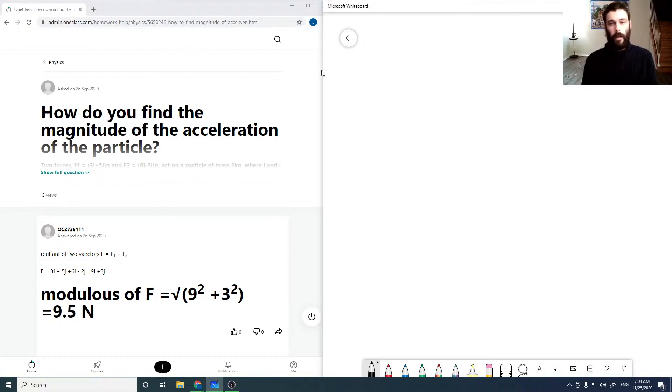So the part that's cut off there is we've got two forces. F1 is 3 newtons i-hat plus 5 newtons j-hat, and our second force is 6 newtons i-hat minus 2 newtons j-hat. i-hat and j-hat are just unit vectors in the x and y direction respectively.